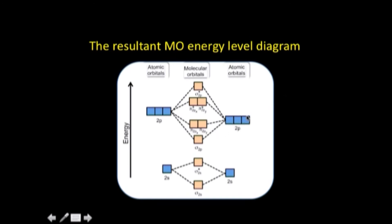In the molecular orbital energy level diagram for NO, the atomic orbitals of oxygen on one side and nitrogen on the other are shown, with oxygen's atomic orbitals having energy slightly lower than those of nitrogen. The 2s of oxygen and 2s of nitrogen combine to give two molecular orbitals — one bonding, one antibonding. Then the 2pz orbitals combine to give one bonding sigma and one antibonding sigma orbital. The 2px and 2py orbitals from both atoms combine laterally to give pi molecular orbitals — the bonding ones and the antibonding ones — resulting in the complete molecular orbital energy level diagram for NO.